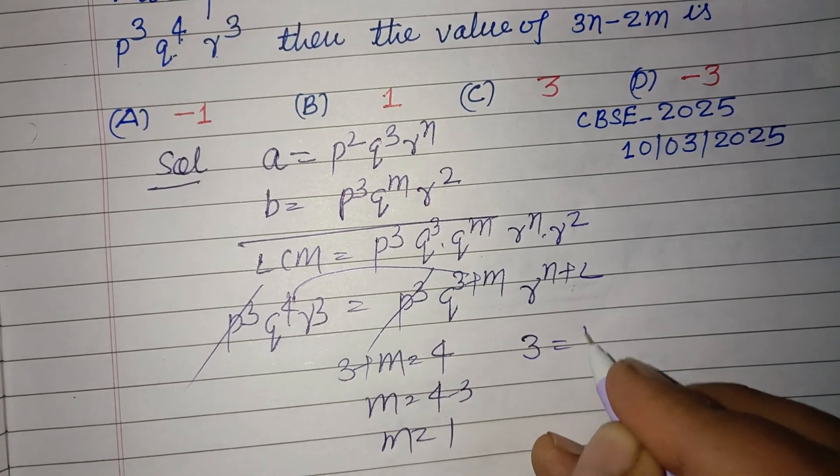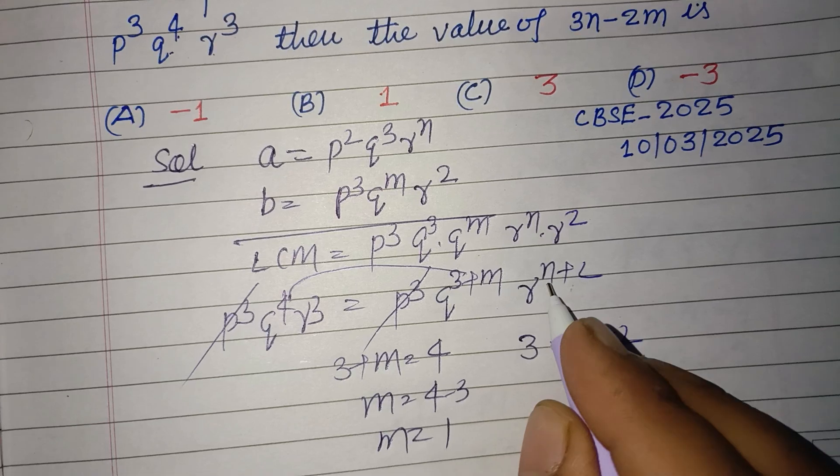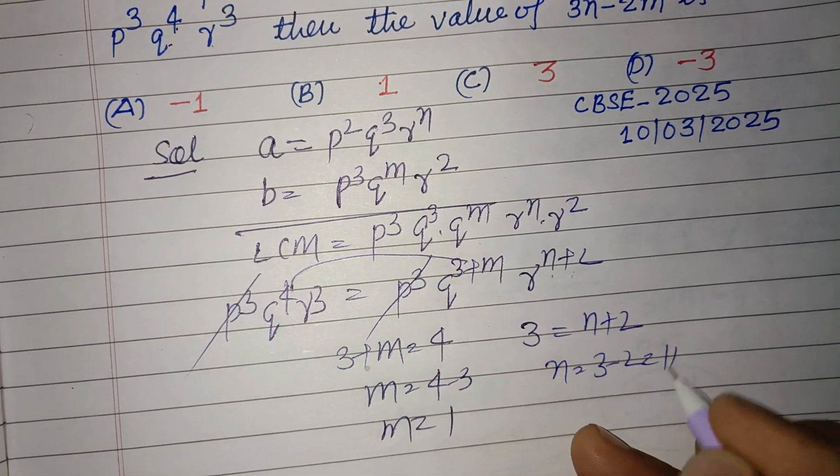And R cubed, so 3 equal to n plus 2. Here n plus 2, so n equal to 3 minus 2, that is 1.